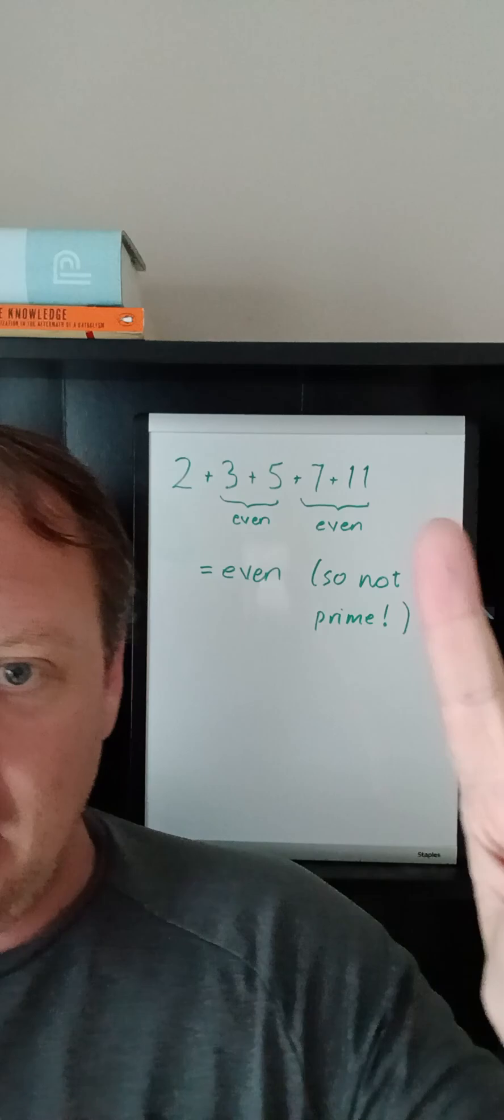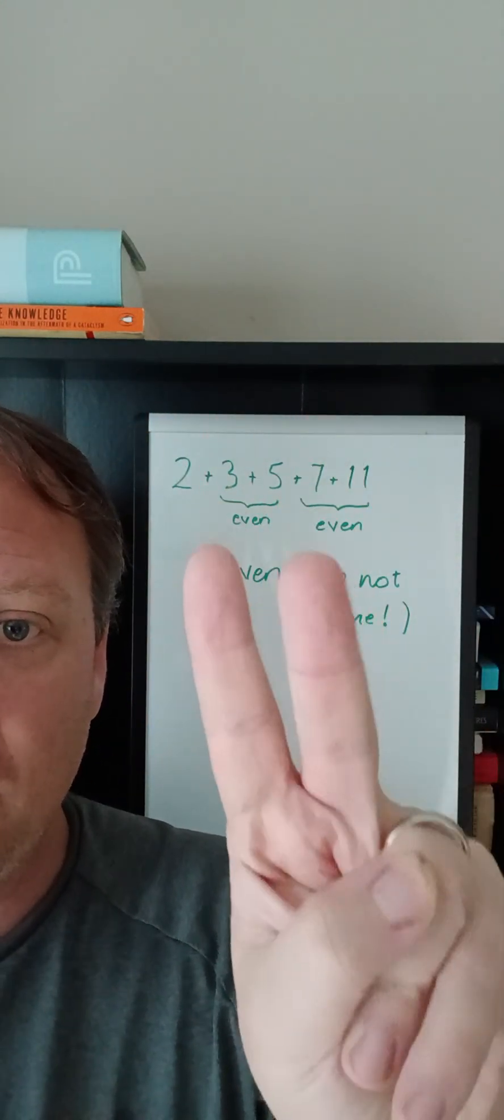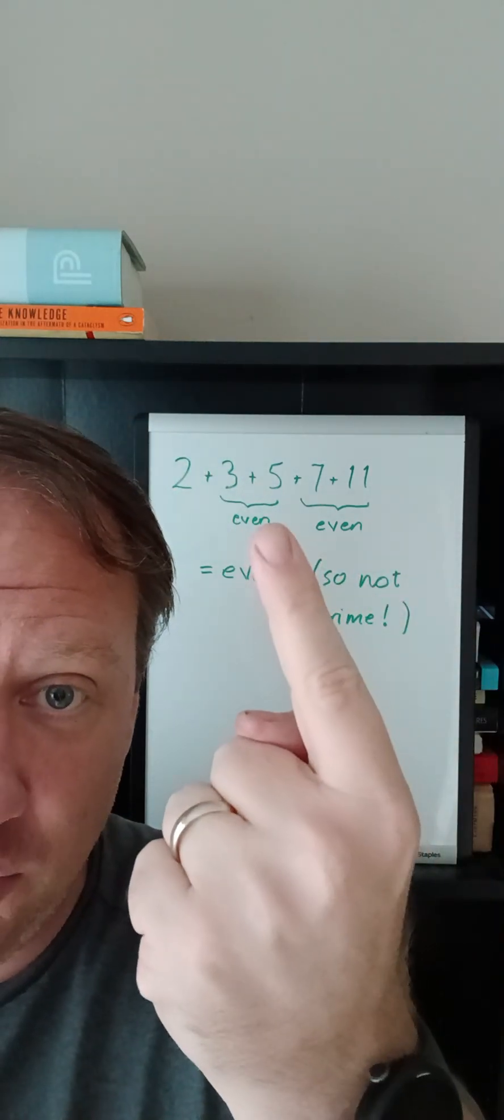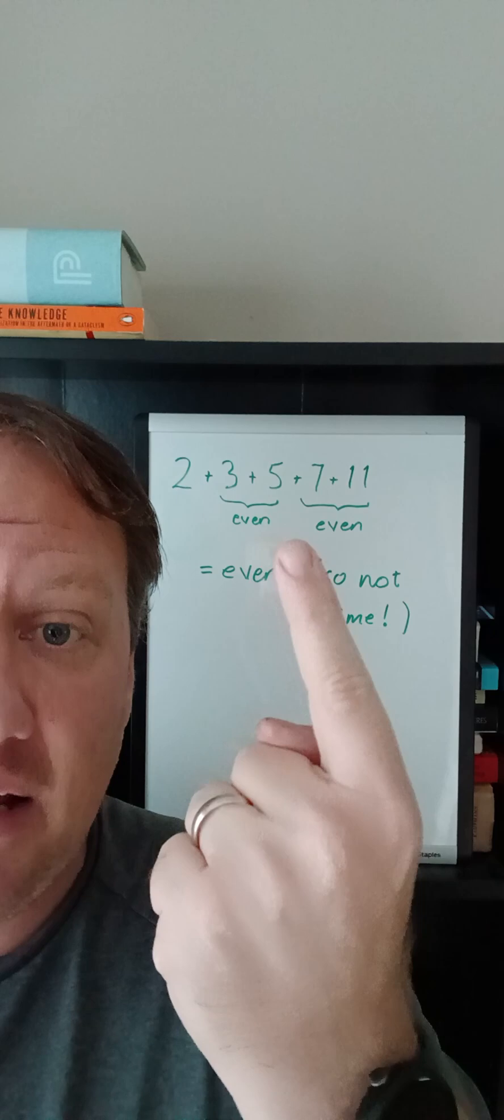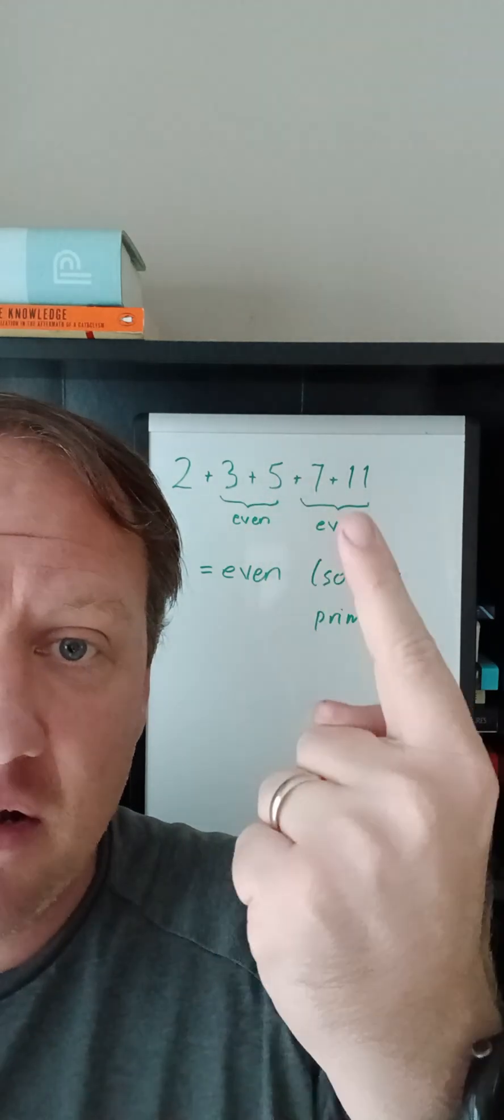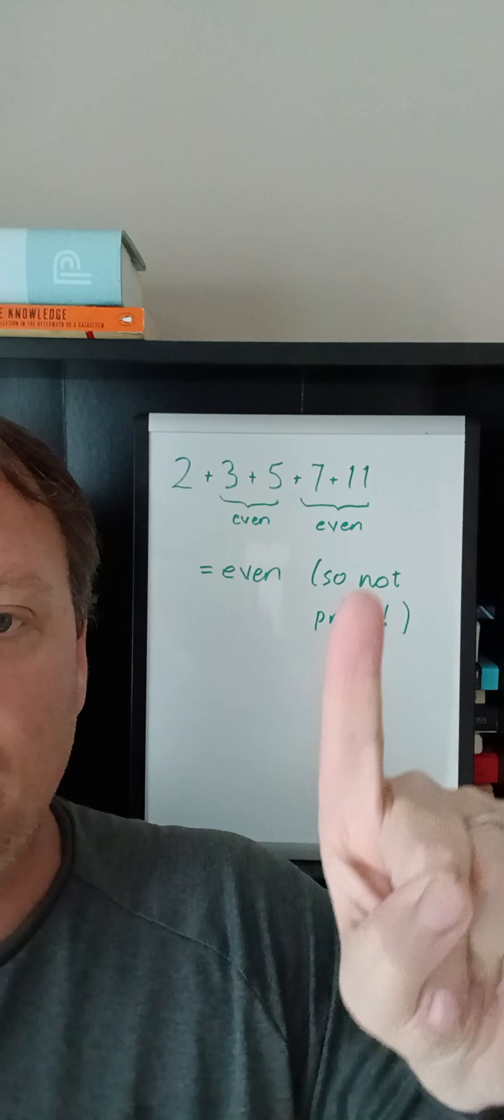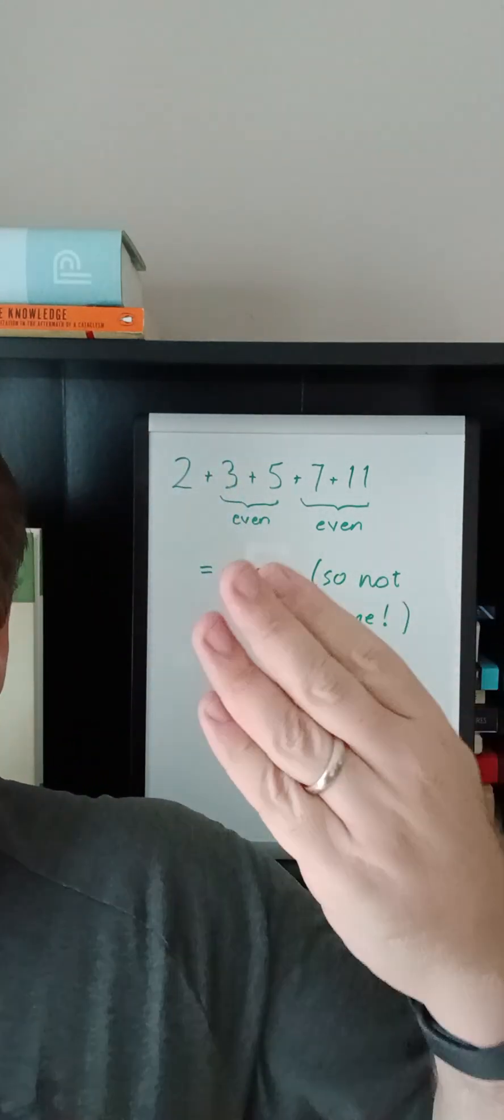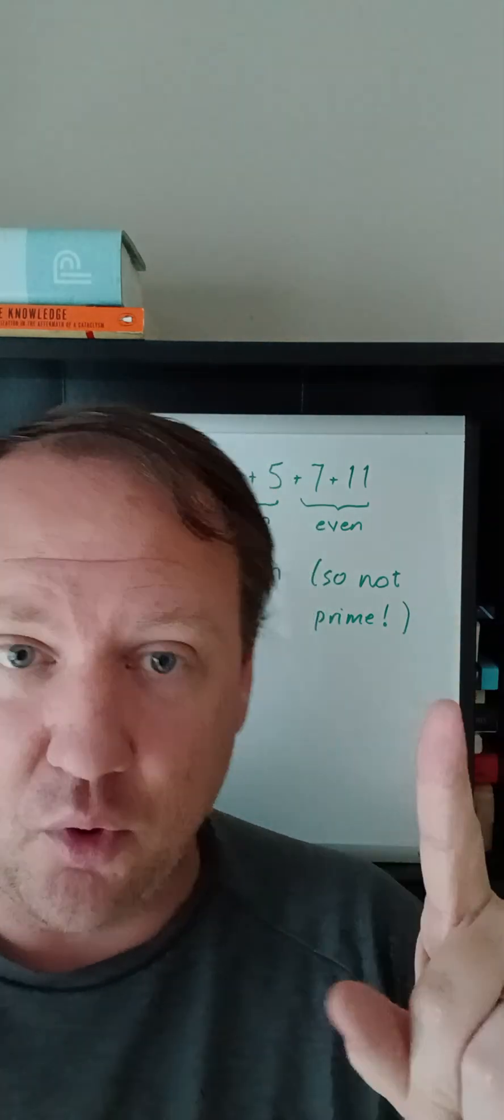Now, what you want to notice immediately before you even calculate anything is that if you pick any two prime numbers here other than two, they're going to be odd. So you're going to get an even number, and then another even number, so altogether you're going to get even plus even plus even, so the result is going to be even. Well, the only even prime is 2, a pretty famous and important fact.